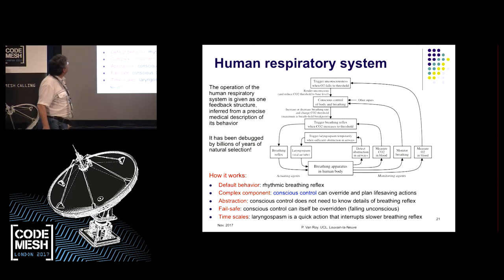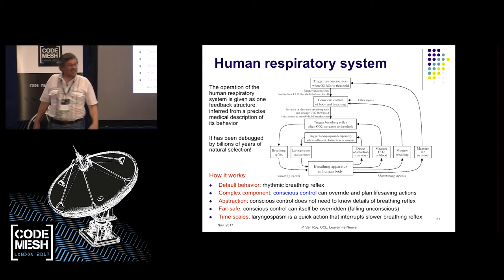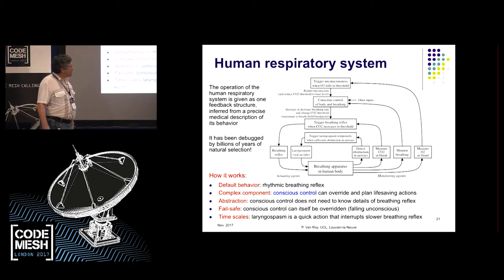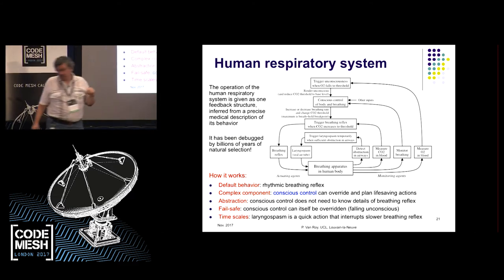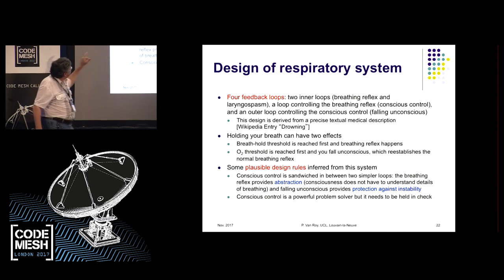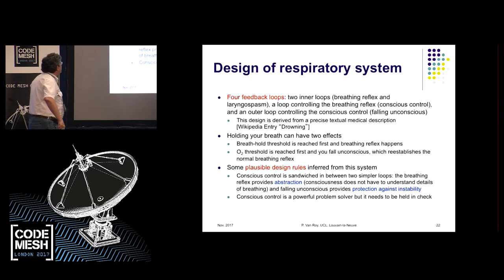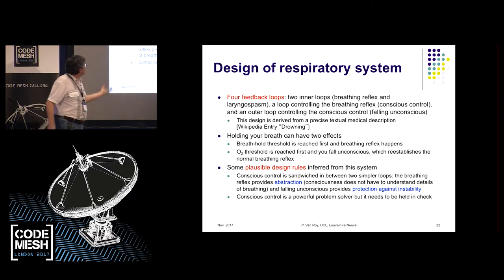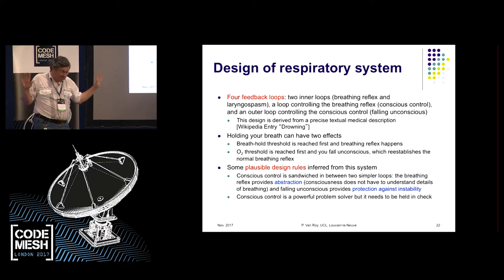So how did I determine this? Actually from Wikipedia — specifically the entry on drowning, which explains the whole structure. I haven't seen it in a medical paper, though I think it's a very interesting way to look at this system. There are four loops: two inner loops — breathing reflex and laryngospasm — a loop controlling the reflex which is conscious control, and an outer loop which is the fail-safe. Holding the breath has two possible outcomes: either the breath-hold threshold is reached and you breathe no matter what, or the oxygen threshold is reached and you fall unconscious, causing you to breathe again. So holding your breath as long as you can poses no danger to your life.